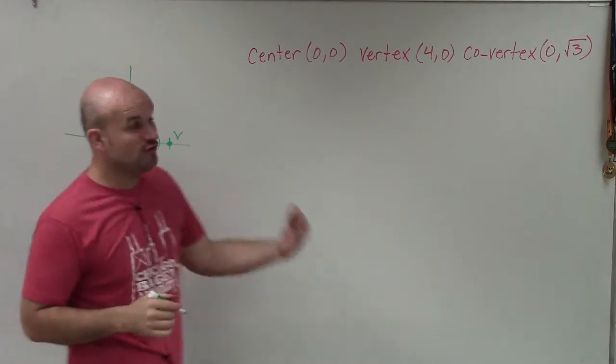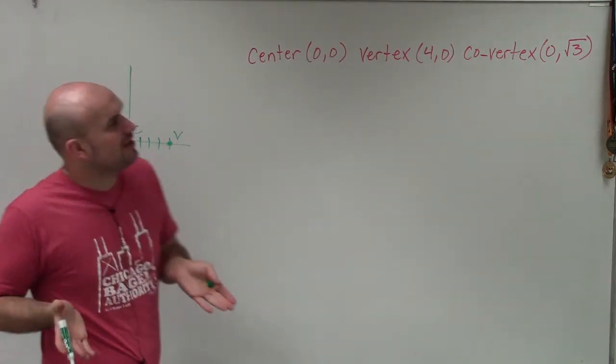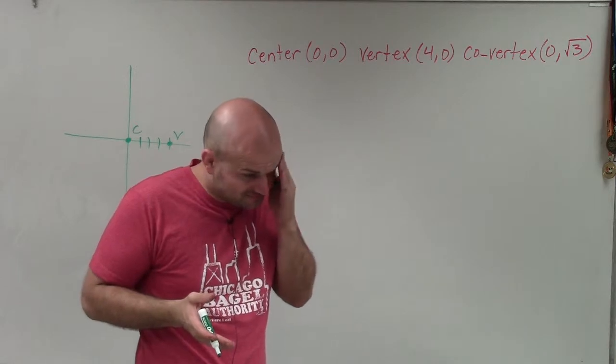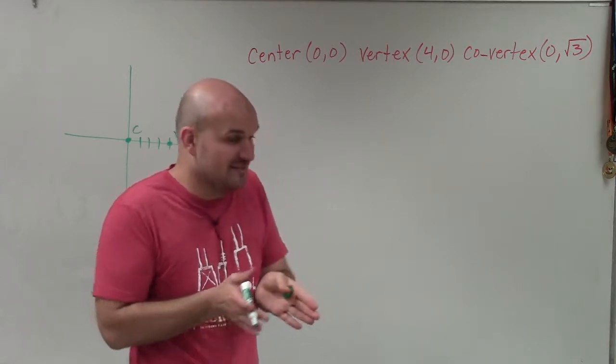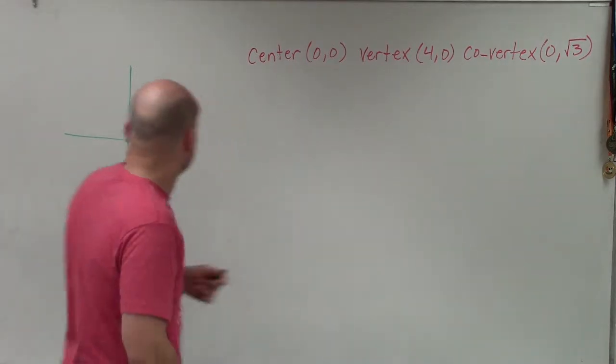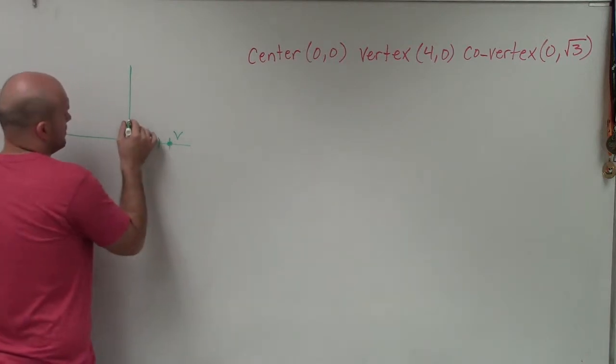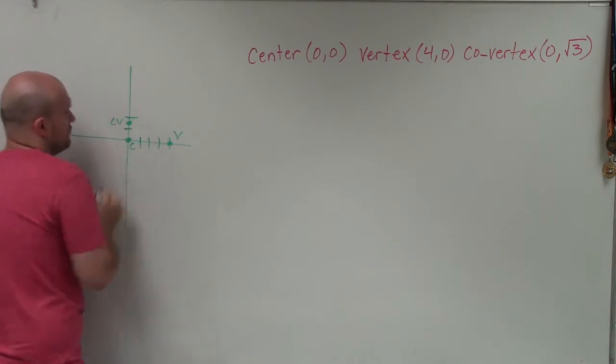The co-vertex is at (0,√3). Square root of 3 is anywhere between 1 and 2, so I'll plot it here. Let's label this as the co-vertex.